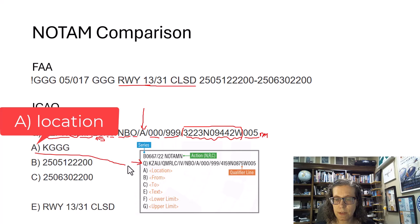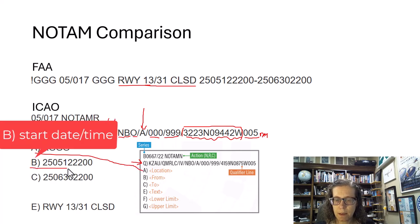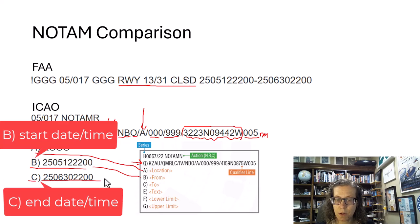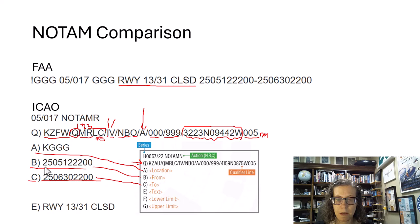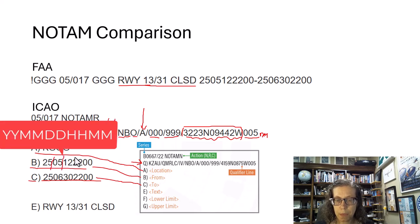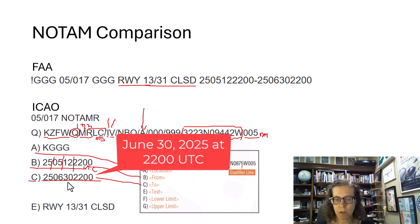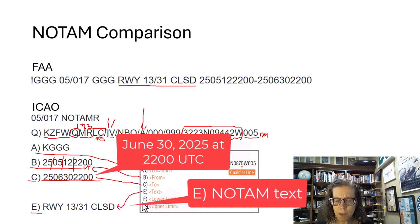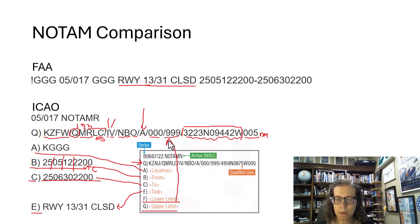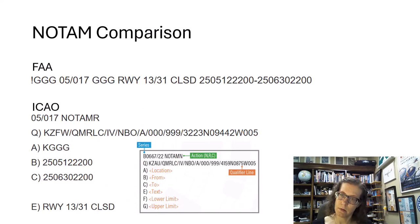Then you have A, that's the location, that makes sense. B is what time it started and C is what time it goes until. It's the same exact thing where we have year year month month day day and time hour hour minute minute and still in UTC. Basically our runway is going to be closed until June 30 at 2200 UTC. The text itself is under E. The runway 1331 is closed. The lower and upper limit seem to have to do with this part of the qualifier line. That is a complete breakdown.